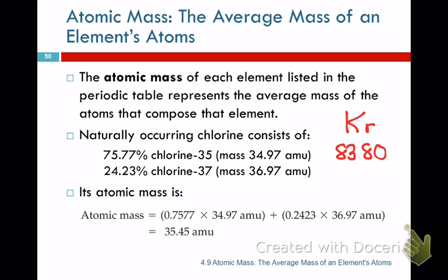If you go fishing and catch 10 fish and wanted to get the average weight, what would you do? Weigh all of them and divide by 10, right? Just add it, divide by as many as you have. That's actually how we report this 83.80 — by weighing a bunch of atoms, dividing by the number of atoms, and getting the average mass.